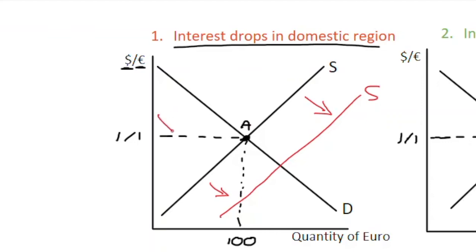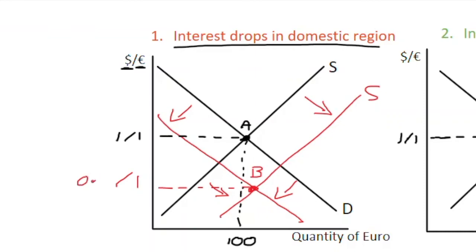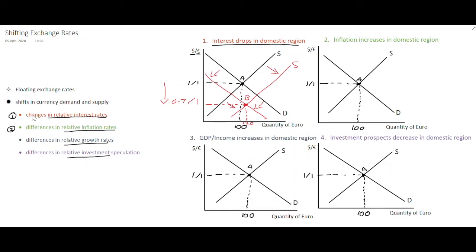People are also demanding less euros, so that is a leftward shift of the demand curve for euros. The leftward shift brings down our exchange rate to point B, where we see a definite depreciation of the euro. Now one euro can get us far fewer dollars — let's say 0.7, or 70 cents. There are also more euros out in the market, say 120. The key point is that after the interest rate drop in the domestic region, we have a depreciation of the domestic currency.